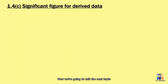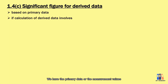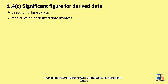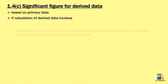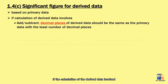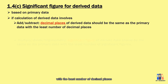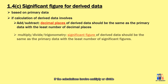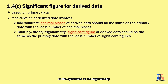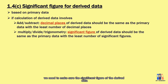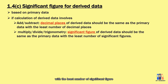Now we're going to talk about significant figures for derived data. Physics is very particular with the number of significant figures. If the calculations involve addition or subtraction, we focus on the decimal places — the derived data should have the same decimal places as the primary data with the least number of decimal places. If the calculations involve multiplication, division, or trigonometric operations, the significant figures of the derived data should match the primary data with the least number of significant figures.